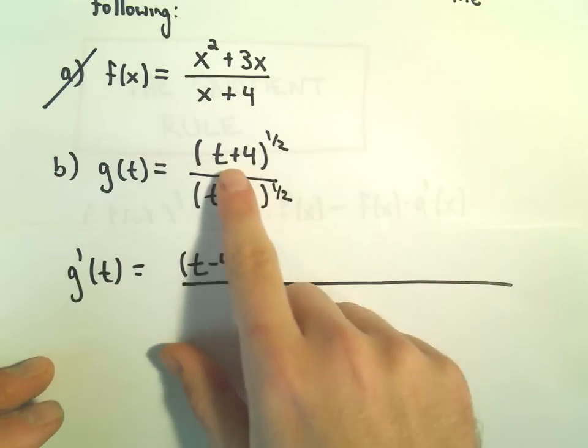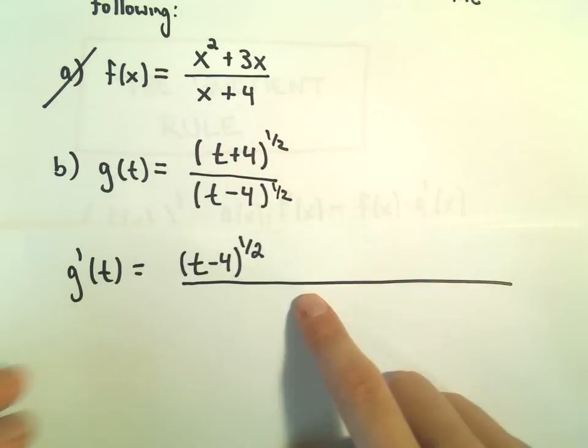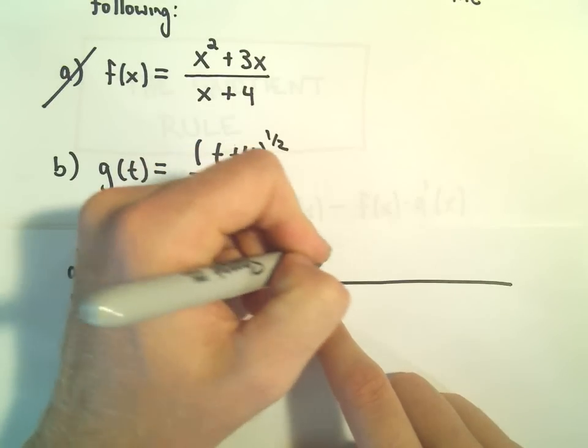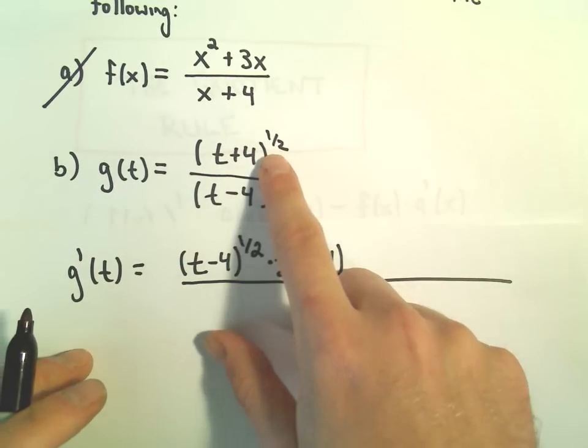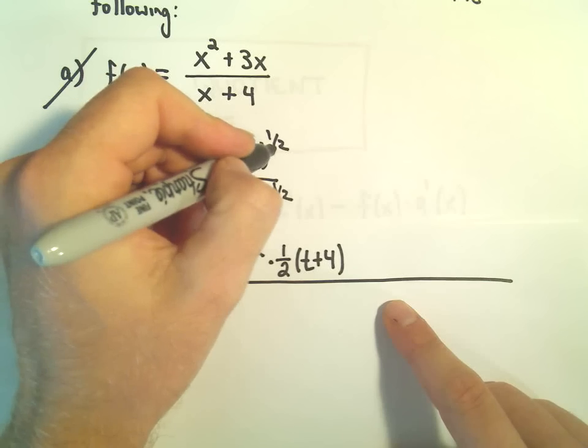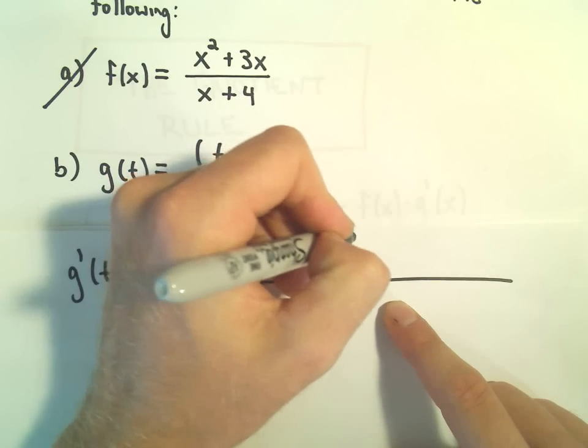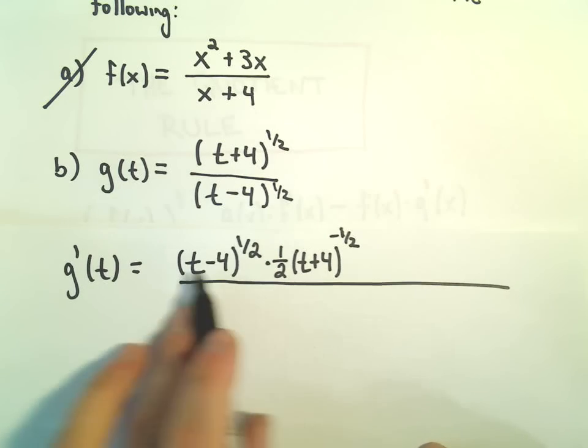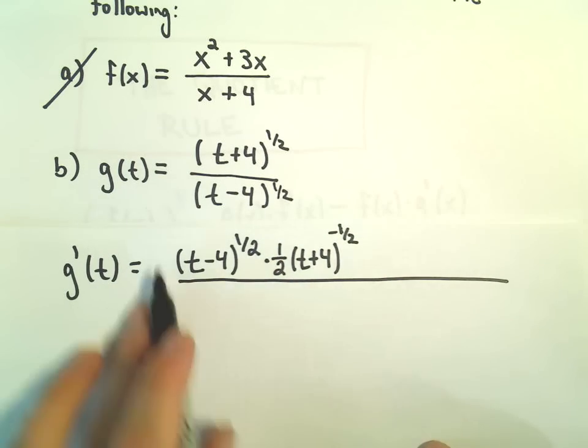Then we're going to take the derivative of what's in the numerator. So if we do t plus 4 to the 1 half, the 1 half would come out front. We would leave the t plus 4 alone and subtract 1. Well, 1 half minus 1 would be negative 1 half, and that'll be the derivative of our first term.